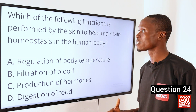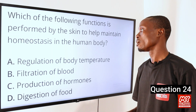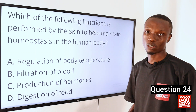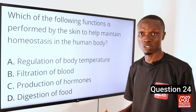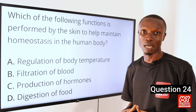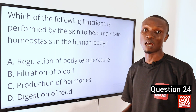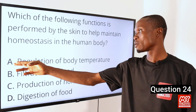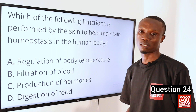The skin helps in maintaining homeostasis by regulating body temperature. When the body temperature gets hot, the skin helps to cool it down through processes such as sweating and vasodilation. So that makes option A the correct answer.